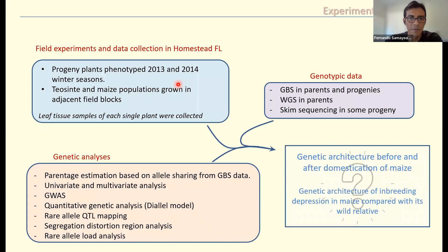Here is the big picture of the project. I grouped all tasks in two boxes. The first box lists tasks related to the field experiment and data collection in Homestead, Florida. The purple box lists the types of genotyping used in this project: GBS in parents and progeny, whole genome sequencing in parents, and skim sequencing in some of the progeny. The final box lists genetic analyses done by combining genotypic and phenotypic data to answer the questions I mentioned.